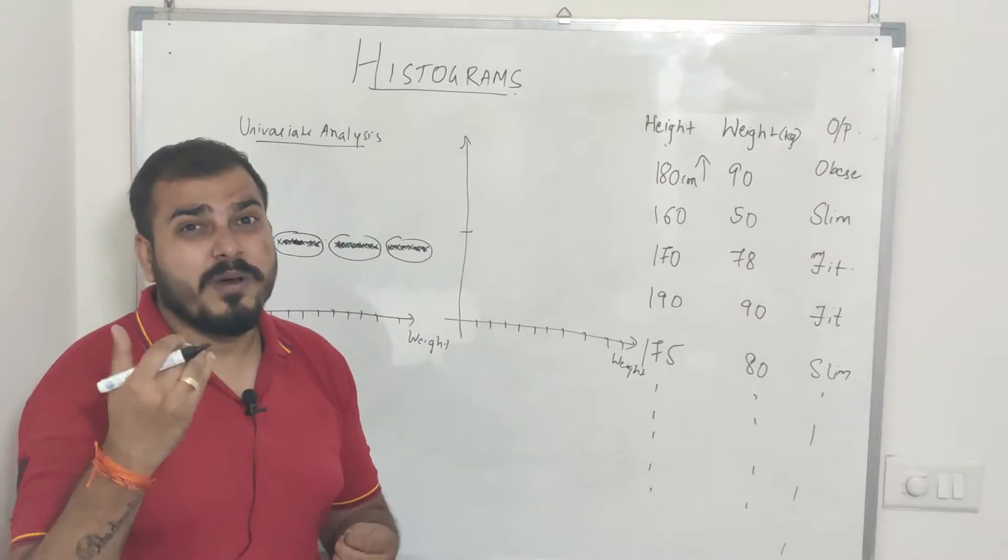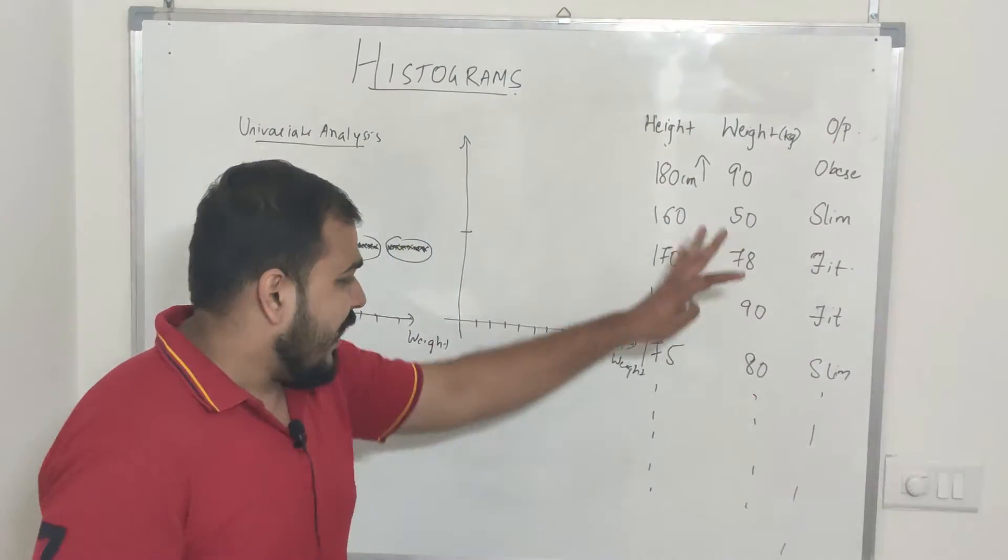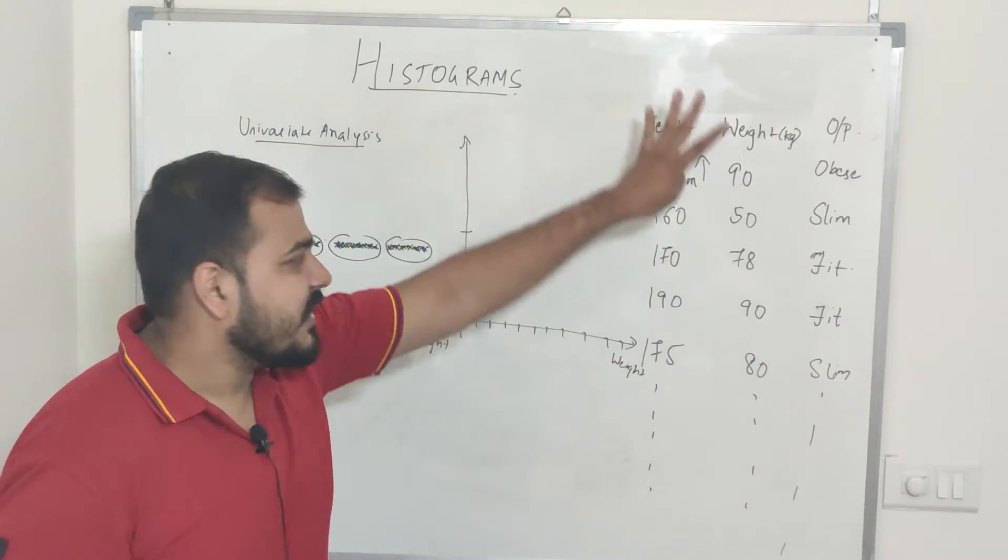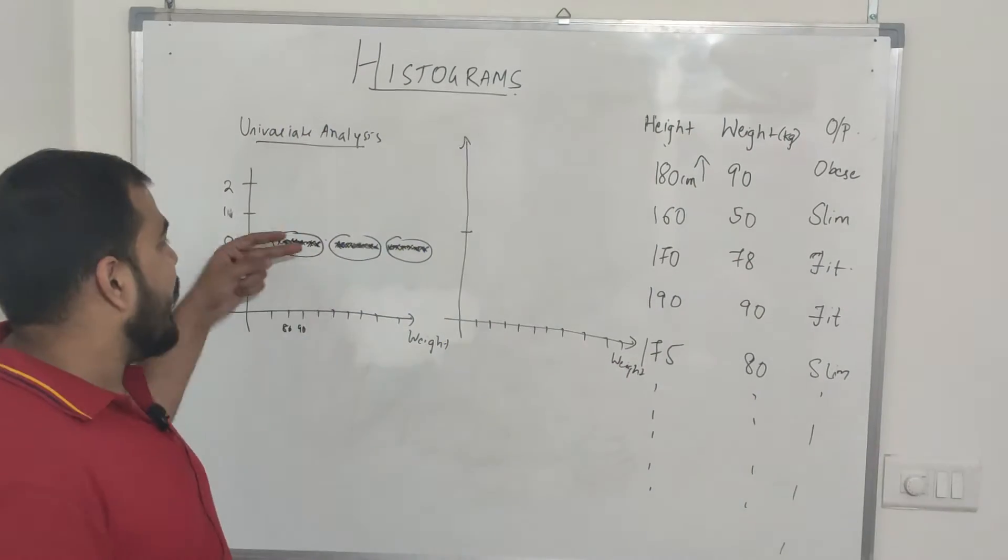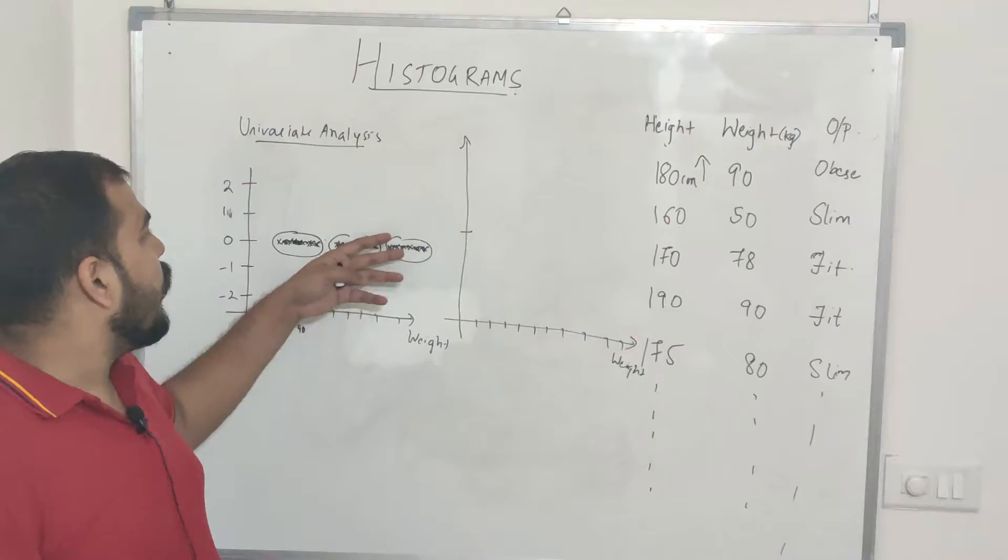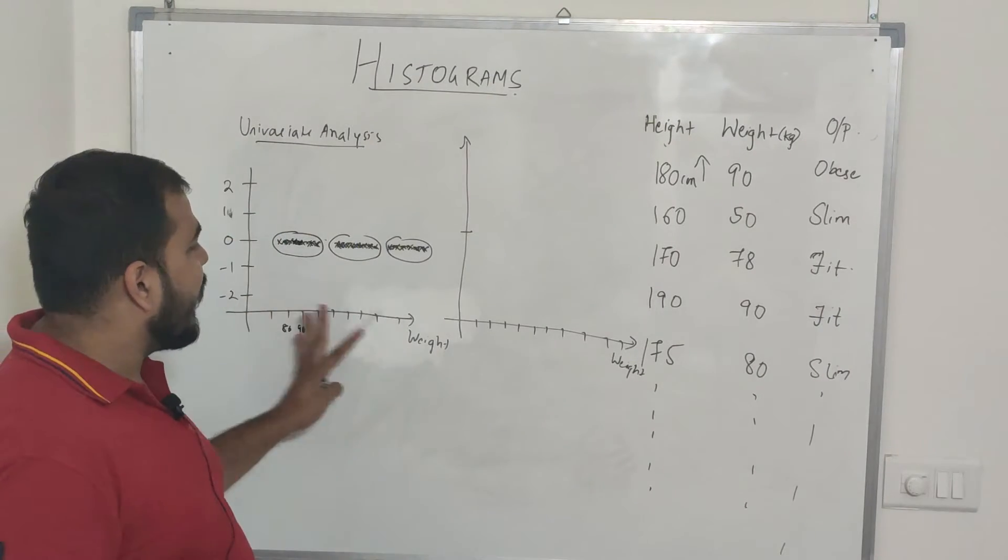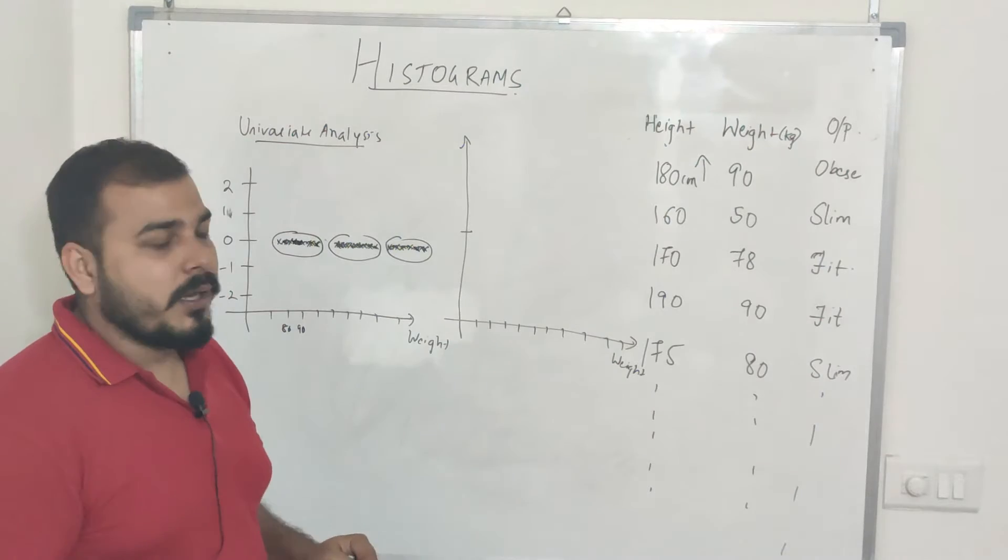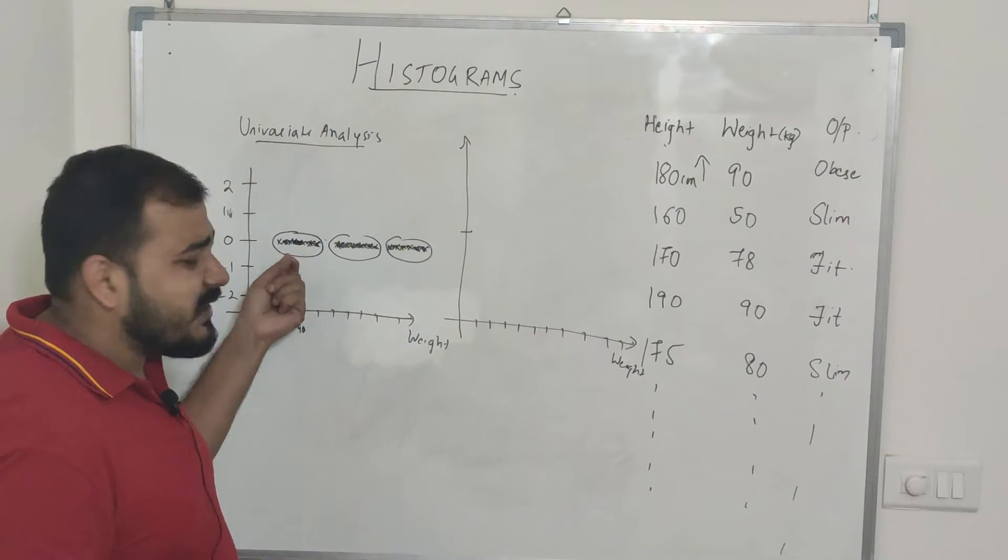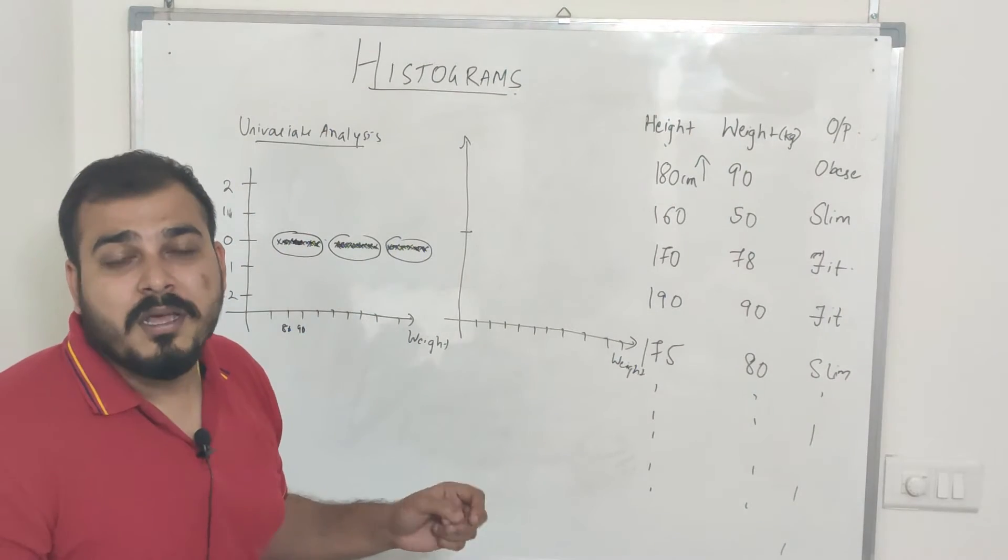There's so many points that are overridden over there based on the dataset. I've just drawn a small dataset. Consider that I have thousand records and I'm just trying to plot a 1D univariate analysis diagram. In the y-axis will be zero, in the x-axis I'll be having the feature. When I see these particular points it is impossible for you to count.